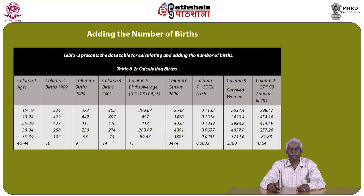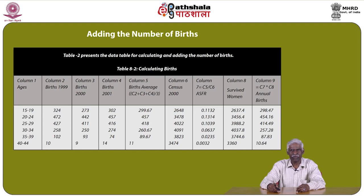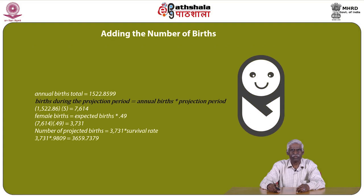Table 2 presents the data for calculating and adding the number of births. Column 1 gives various broad age groups; column 2 is the number of births in 1999; column 3 is births in 2000; column 4 is births in 2001; and column 5 equals (column 2 + column 3 + column 4) / 3, giving the average annual births. Births during the projection period equal annual births multiplied by the projection period. Female births equal expected births multiplied by 0.49, and the projected births of 3,731 are multiplied by the survival rate of 0.9809.